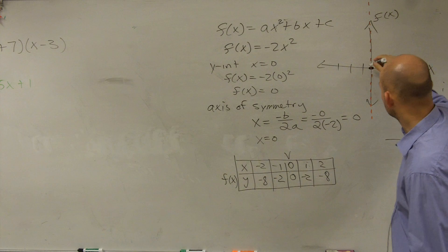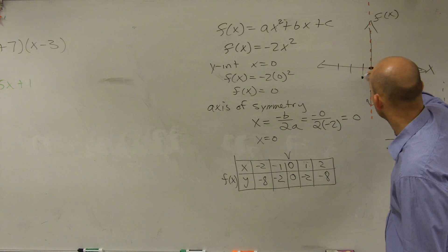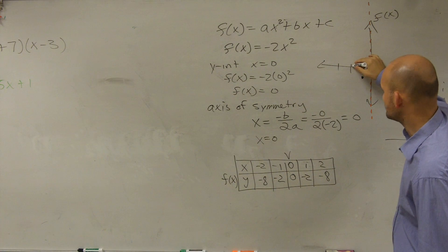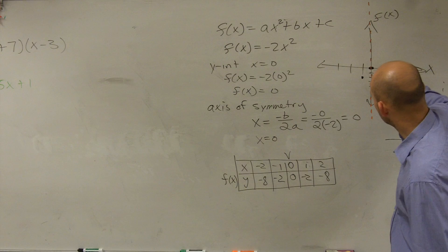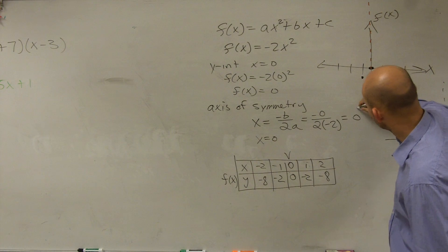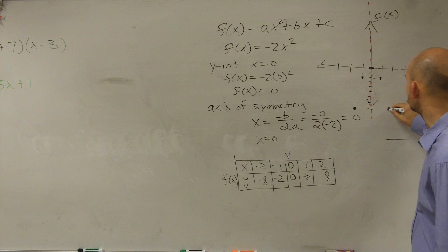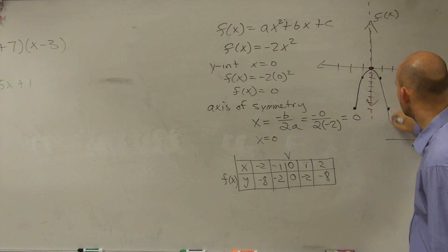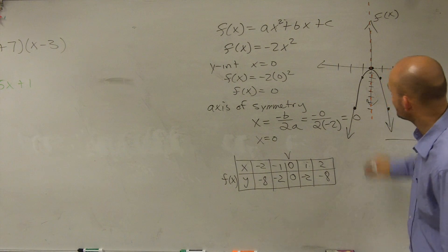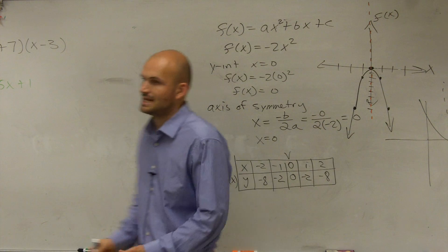At -1, I have to go down -2. At -2, I go down -8. 1, 2, 3, 4, 5, 6, 7, 8. At 1, I go down 2. And at over 2, I go down 2 or down 8. So you guys can see my graph is going to look like that.